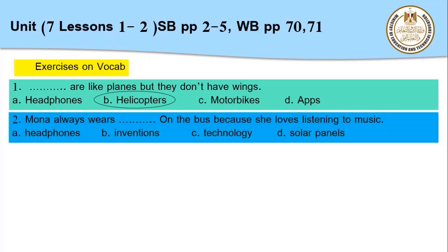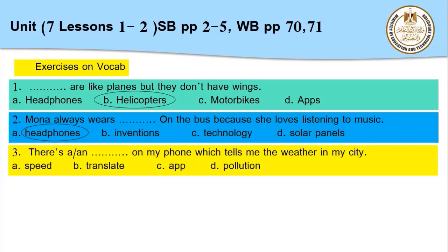Number three: there is a/an [blank] on my mobile phone which tells me the weather in my city. Choices: speed, translate, app, or pollution. 'Pollution' means التلاوث, so the correct answer is 'app.' Number four involves a French article — asking to translate from French into Arabic. Number five: the road is not big enough for cars but you can go down it on a/an [blank]: bus, train, airplane, or motorbike. The correct answer is 'motorbike.'